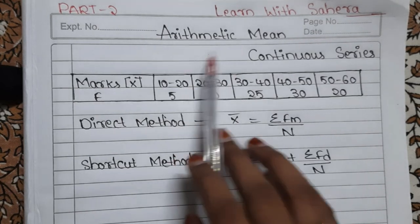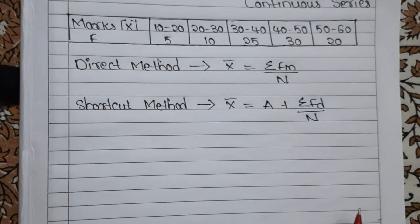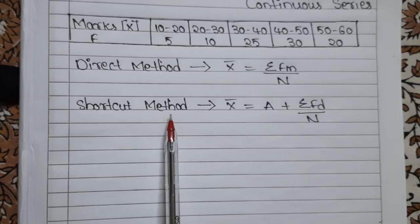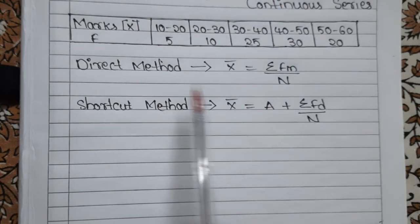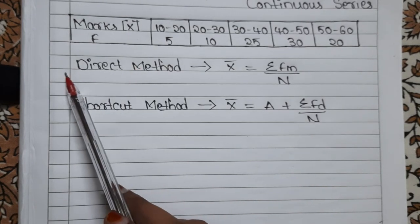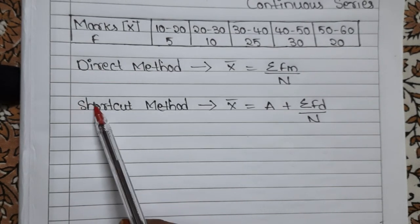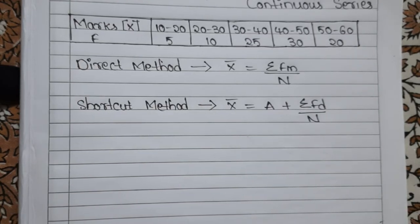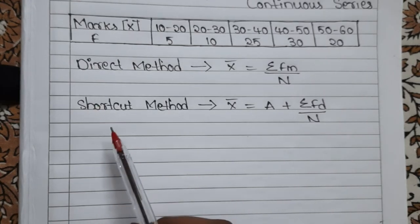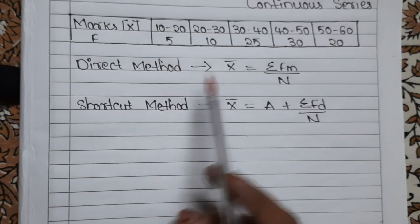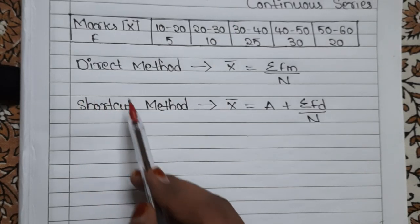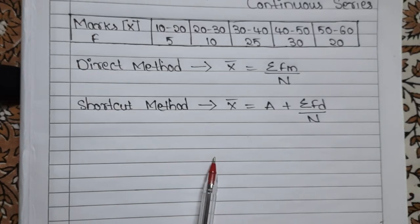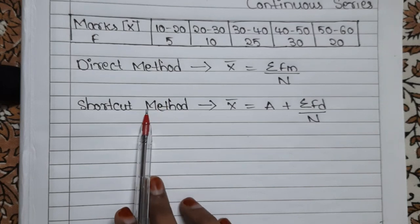So let us go with the calculation of arithmetic mean in continuous series. There are two methods: one is the direct method and the other is the shortcut method. Whenever they ask you to calculate arithmetic mean, try to go with the direct method only, because it is really very easy. Both methods give the same answer. If they specifically ask for the shortcut method, then only go with shortcut method; otherwise use the direct method.